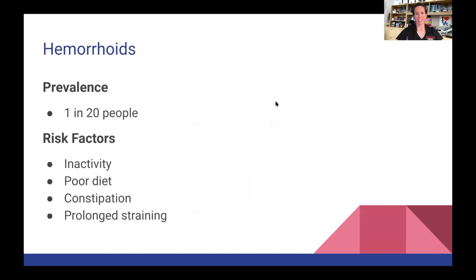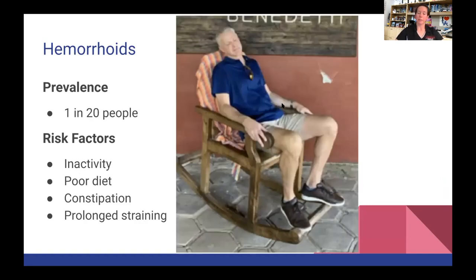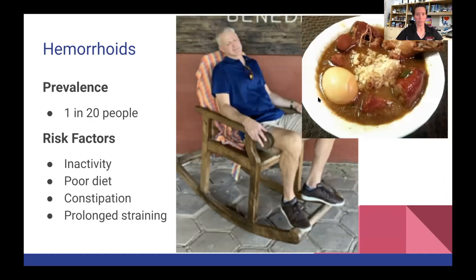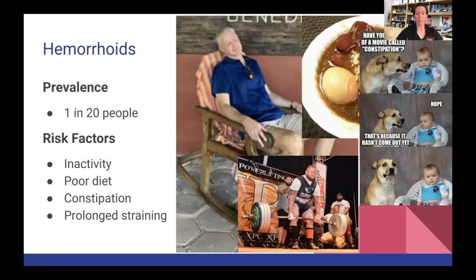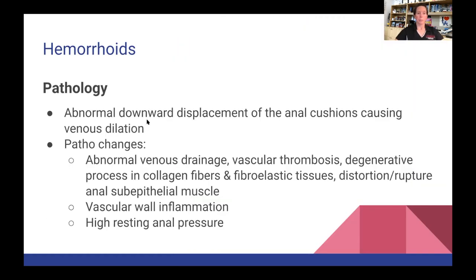The pathology behind hemorrhoids is the abnormal downward displacement of the anal cushions causing venous dilation. Pathological changes include abnormal venous drainage, vascular thrombosis, degenerative process of collagen fibers and fibroelastic tissues, distortion or rupture of the anal subepithelial muscle, vascular wall inflammation, and high resting anal pressure. The rectum is the most posterior element of the pelvic viscera. The dentate line — the boundary between the viscera and the body wall — is surrounded by the superior and inferior rectal arteries.